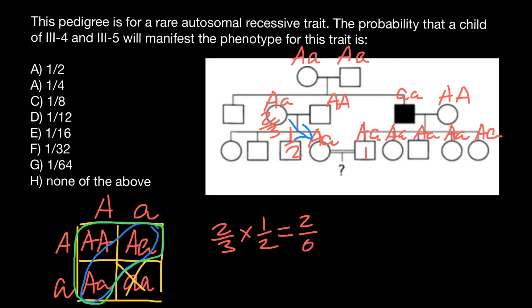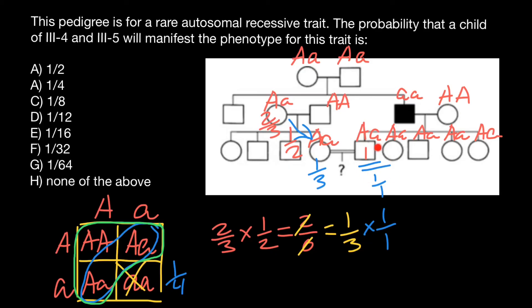Now we can do our final calculations. The probability for III-5 to be heterozygous is 2/3 times 1/2, which gives 2/6, reduced to 1/3. We also know that III-4 is 100% heterozygous — the same as 1 over 1. If we know both parents are heterozygous, we can find the probability of having a homozygous recessive child, which is 1/4.